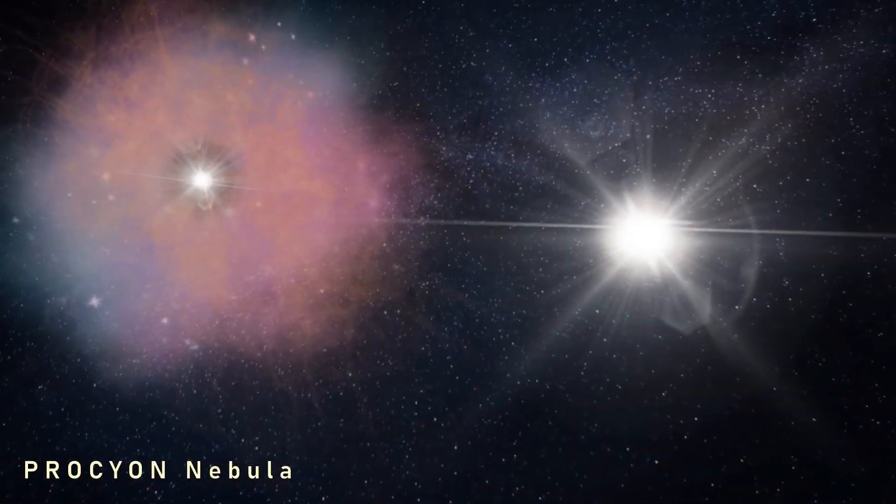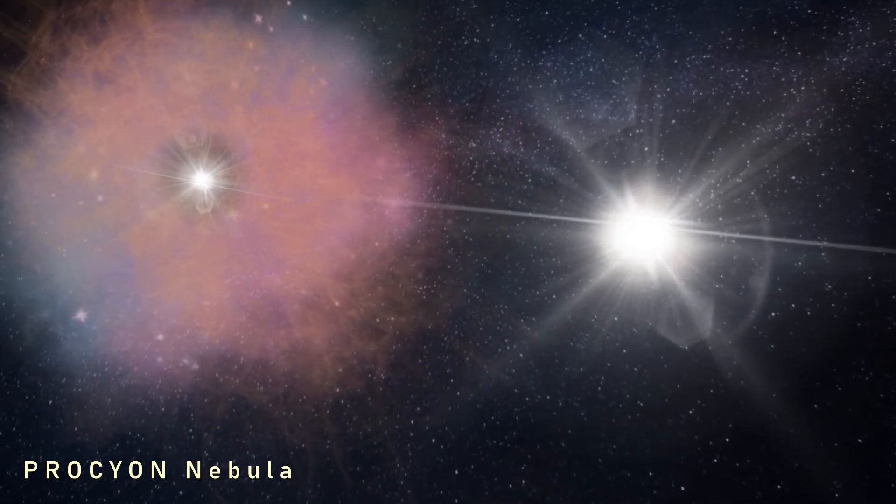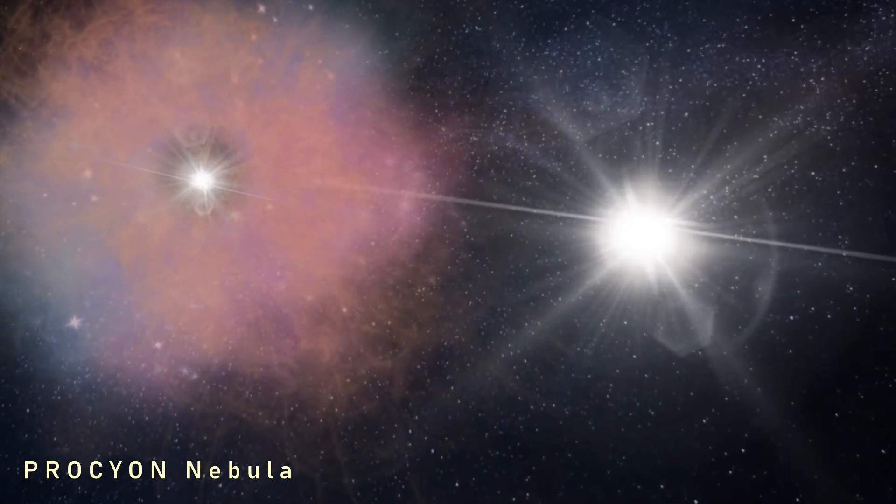It's thought that Procyon B came to the end of its life some 1.2 billion years ago, after a main sequence lifetime of around 700 million years.